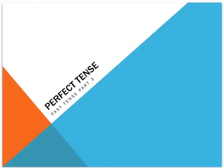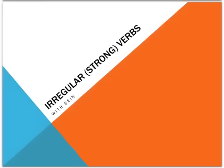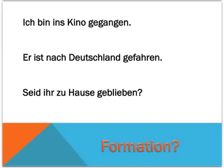Welcome to our third screencast on the perfect past tense in German. This time we're dealing with irregular or strong verbs which take Sein rather than Haben. Let's have a look at these examples. You'll see that we still have at the end of each sentence a past participle, but this time, rather than a form of Haben in second position, we have a form of the verb Sein.